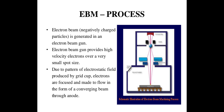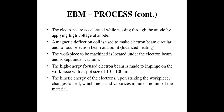The electron beam, which is a negatively charged particle, is generated in an electron beam gun. The electron beam gun provides high-velocity electrons over a very small spot size due to the pattern of electrostatic field produced by the grid. Electrons are focused and made to flow in the form of converging beams through an anode. The electrons are accelerated while passing through the anode by applying high voltage. A magnetic deflection coil is used to make the electron beam circular and to focus it at a point, resulting in localized heating.